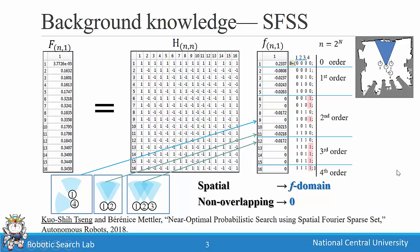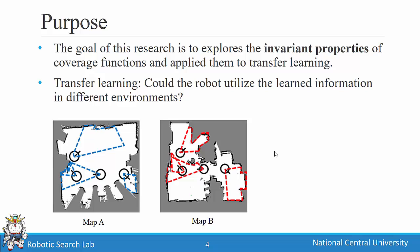This was our previous work, called the Spatial Fourier Sparse Set (SFSS). In this research, we try to prove why this is sparse. The goal is to explore the invariant properties of coverage functions and apply them to transfer learning. The key question is: could the robot utilize coverage information learned in one map when it moves to another map?